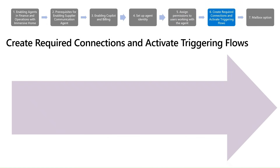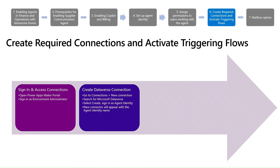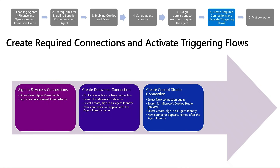To fully enable the supplier communication agent, it's important to set up the necessary connections and activate the triggering flow. This process begins in the Power App Maker Portal, where you need to be signed in as an environment administrator. First, create a new connection for Microsoft Dataverse, making sure to authenticate using the dedicated agent identity. Then repeat the process to create a connection for Microsoft Copilot Studio Preview, again signing in with the same agent identity. Once both connections are created, they will appear in your connection list under the agent's name.